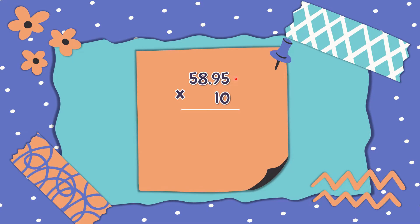At this moment, you already know how to multiply decimals. First, write the numbers in column and multiply from right going to the left. So, the answer is...